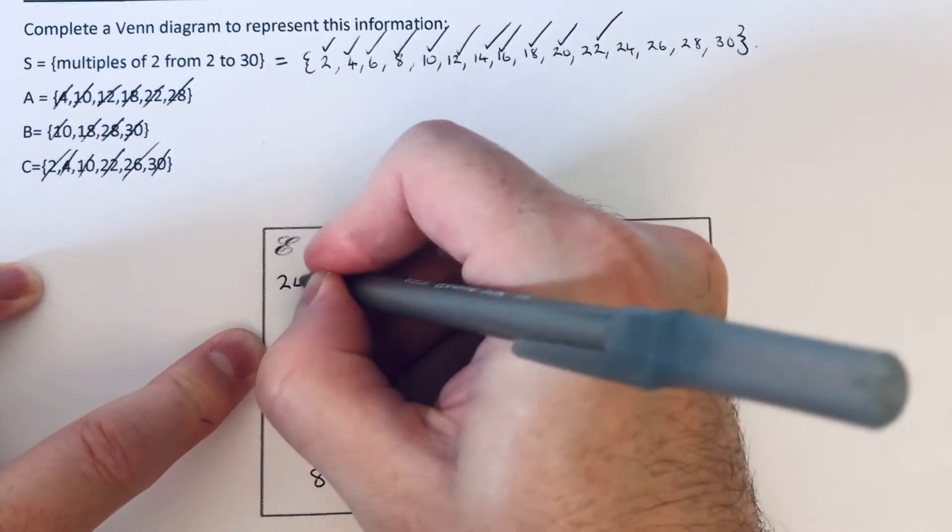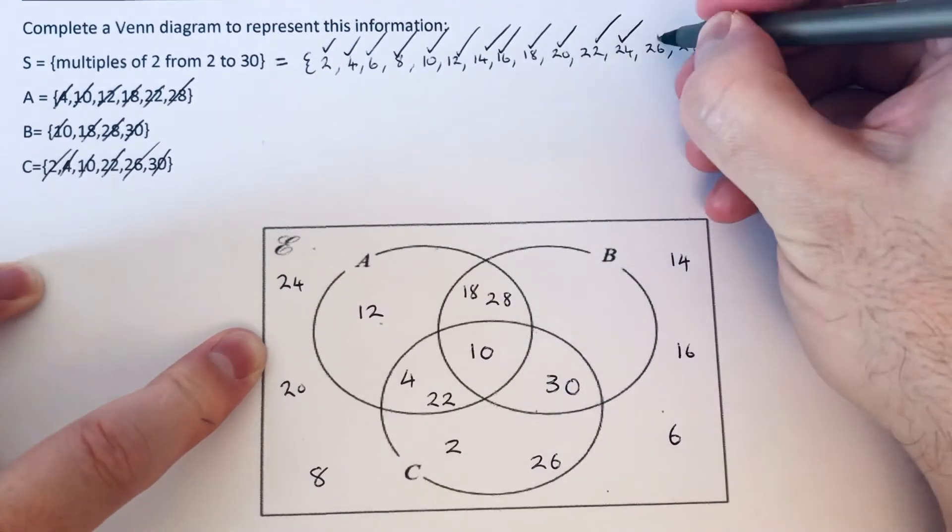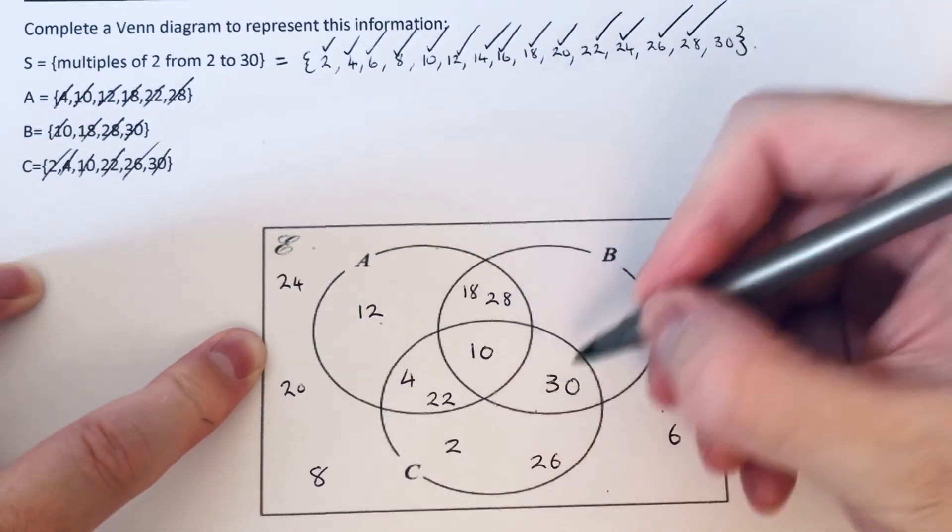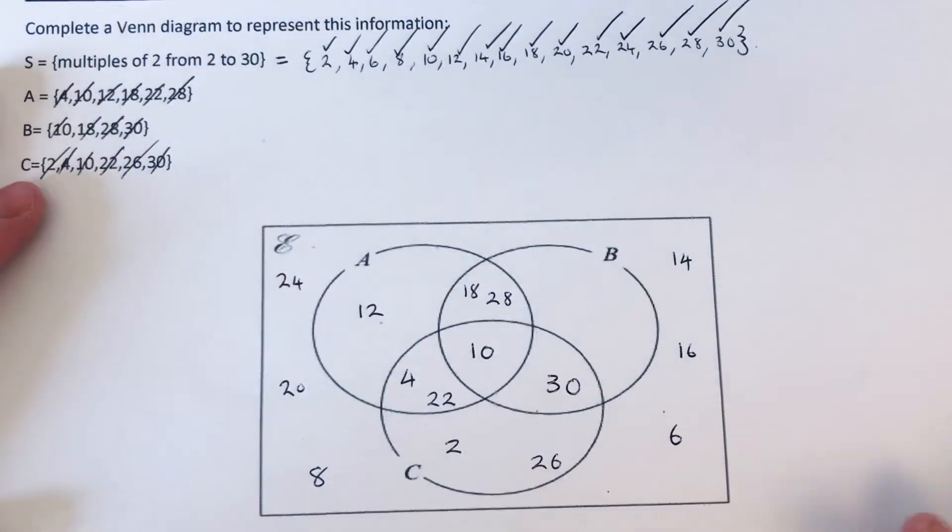22 we've got in. 24 we haven't got. 26 we've got. 28 we've got, and 30 we've also got.